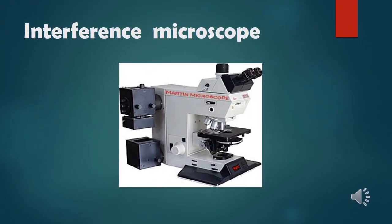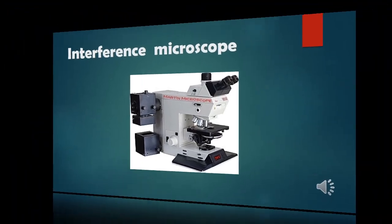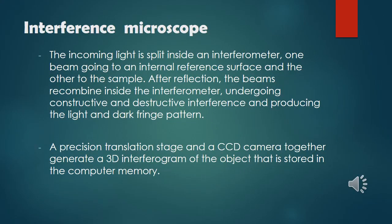Lastly, we have the interference microscope. The main function of the interference microscope is when incoming light is split inside an interferometer, with one beam going to an internal reference surface and the other to the sample. After reflection, the beams recombine inside the interferometer, undergoing constructive and destructive interference and producing a light and dark fringe pattern. A precision translation stage and a CCD camera together generate a 3D interferogram of the object stored in computer memory.